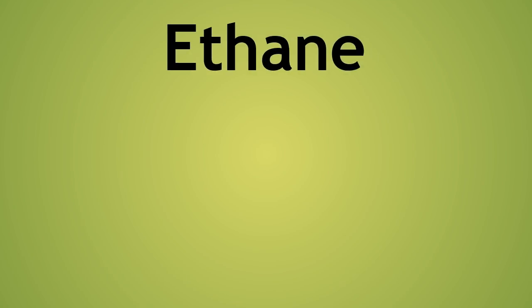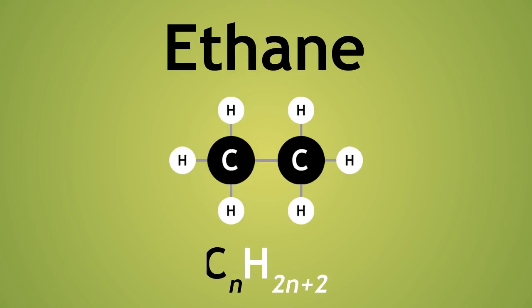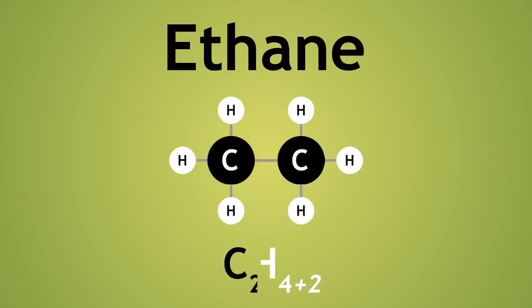Let us look again at ethane. Using the formula CnH2n+2, where N represents 2 for the 2 carbon atoms in ethane, we can see that the number of hydrogens will be 2 multiplied by 2 equals 4, plus 2 equals 6. So 6 hydrogens, C2H6. Using this, we can find the molecular formula of other alkanes.